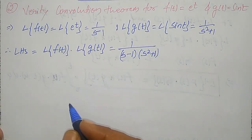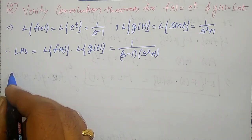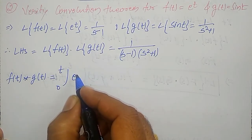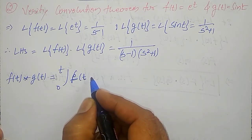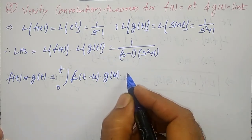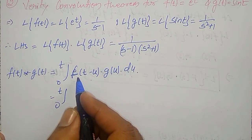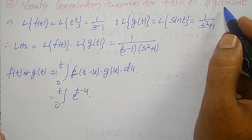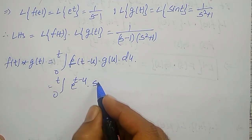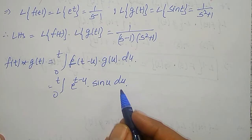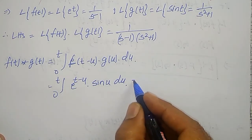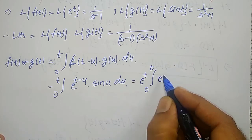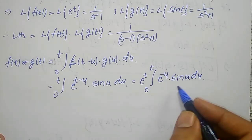To find RHS of the convolution theorem, first let me find the convolution. f of t convolution g of t is integration from 0 to t of f of t minus u into g of u du. Integration from 0 to t: f of t is e to the power t, therefore f of t minus u is e to the power t minus u; g of t is sin t, therefore g of u is sin u du. Integrating with respect to u, I can take e to the power t outside, giving e to the power t times integration from 0 to t of e to the power minus u into sin u du. To integrate this, I use the formula: integration of e to the power ax into sin bx dx equals e to the power ax divided by a square plus b square, into bracket a sin bx minus b cos bx.